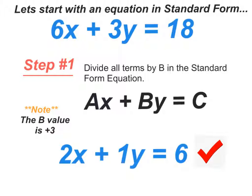So let's start off with an equation in standard form. We have 6x plus 3y is equal to 18. Now there are 3 steps when you transform a standard form equation into an equation in slope-intercept form.